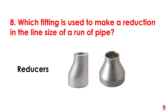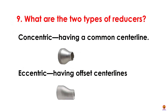Which fitting is used to make a reduction in the line size of a run of pipe? What are the two types of reducers? Concentric reducers have a common centerline. Eccentric reducers have offset centerlines.